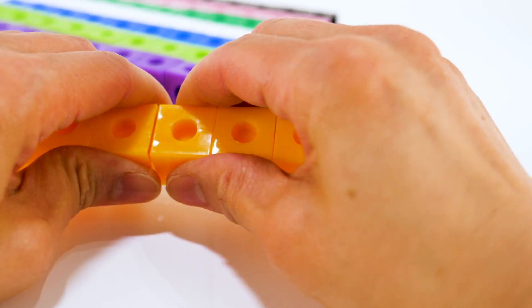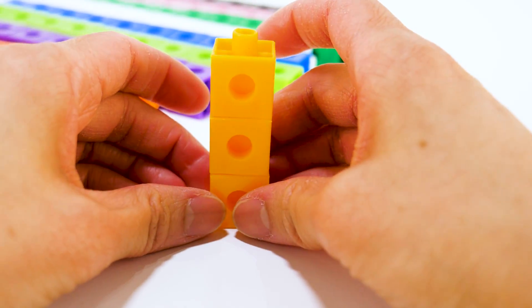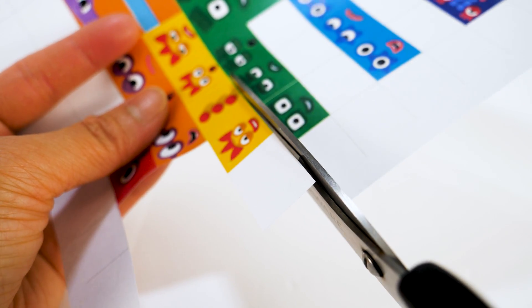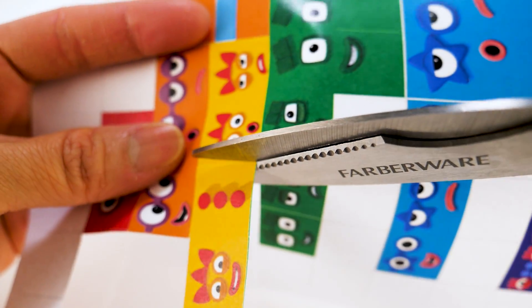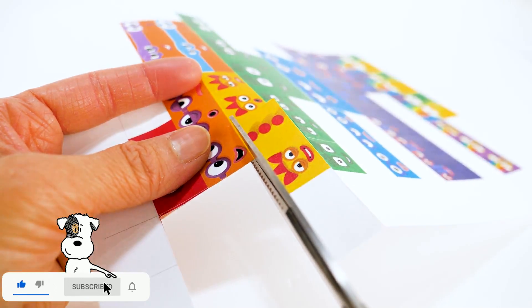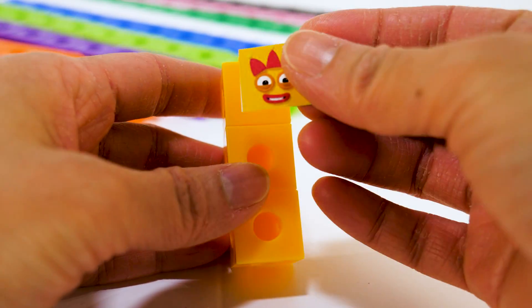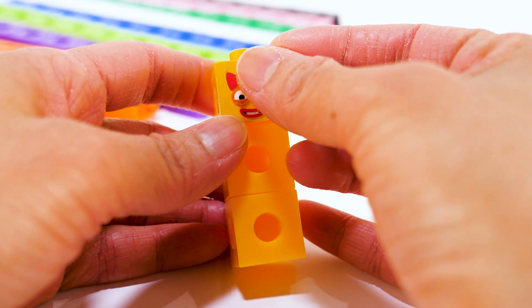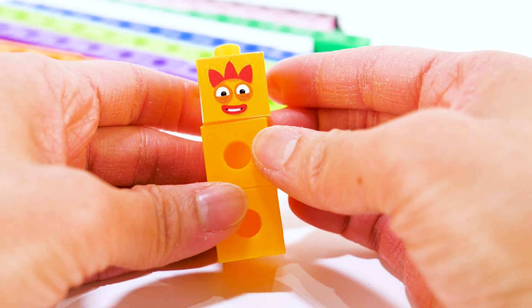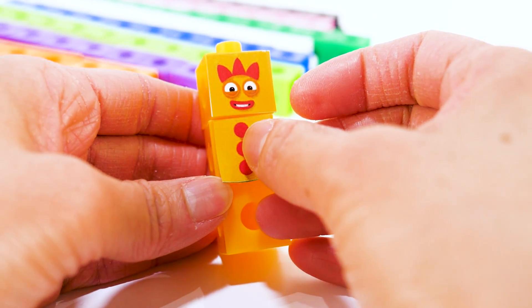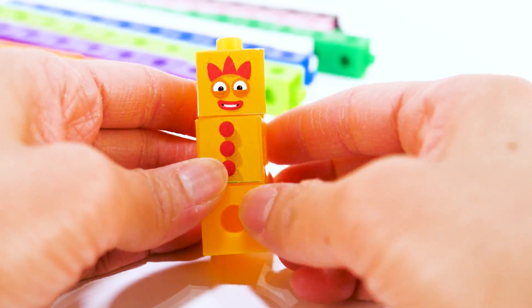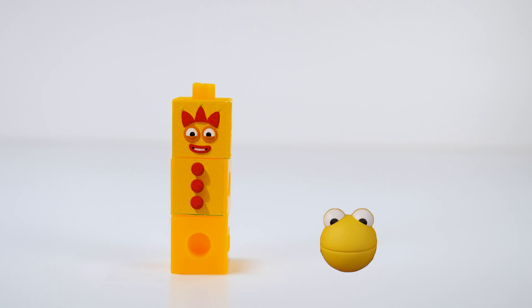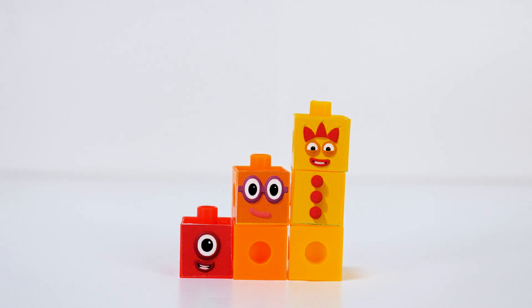Next, we have number block 3. She is made up of three yellow blocks. Number block 3 is an entertainer and loves to make her friends happy. She wears a red hat with three points. And she has three red bars on her body which she loves to juggle. 1, 2, 3. Everything will be alright when number 3 is here. Number block 3.